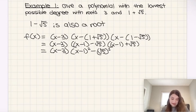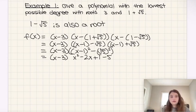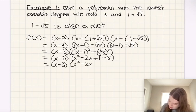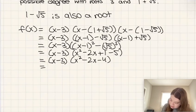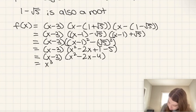And then we're going to keep expanding here. So we're going to end up with x minus 3, and all this should be together still, times x squared minus 2x plus 1 minus 5. Then I'm going to put this together here. So we're going to get x minus 3 times x squared minus 2x minus 4.